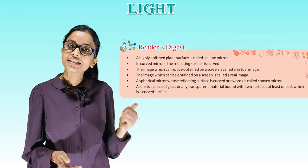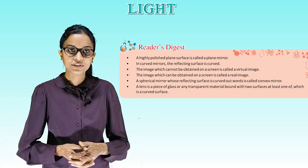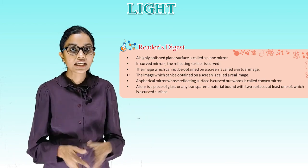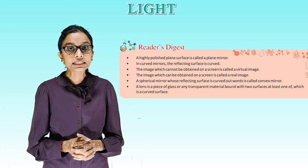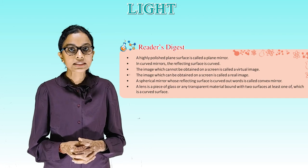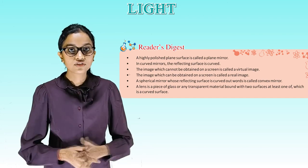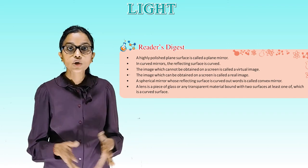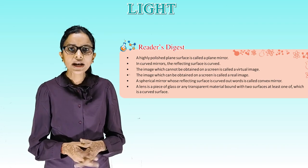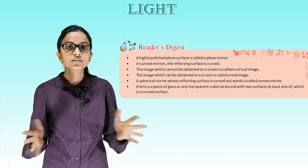Recap: a highly polished plane surface is called a plane mirror. In curved mirrors the reflecting surface is curved. The image which cannot be obtained on a screen is called a virtual image. The image which can be obtained on a screen is called a real image. A spherical mirror whose reflecting surface is curved outwards is called a convex mirror. A lens is a piece of glass or any transparent material bound with two surfaces, at least one of which is a curved surface.